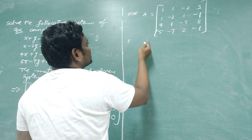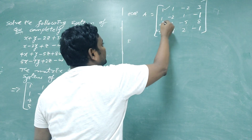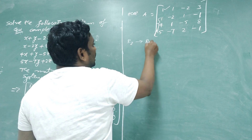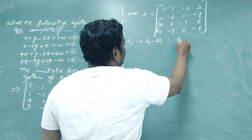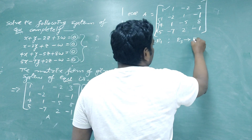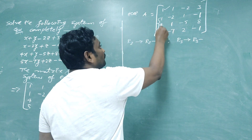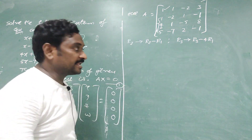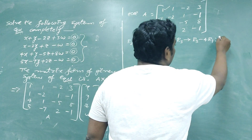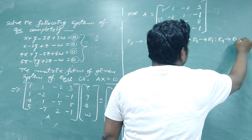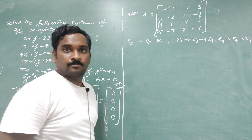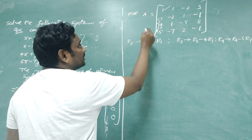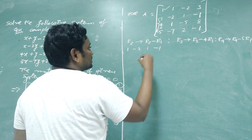Using the first pivot element, we make the three elements below it zero. Apply: R2 → R2 - R1, R3 → R3 - 4R1, and R4 → R4 - 5R1. R1 remains unchanged. For the new R2, write R1 as 1, 1, -2, 3 and subtract R2: 1, -2, 1, -1.